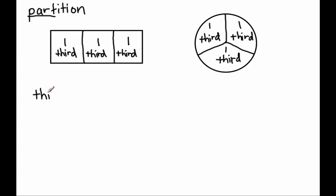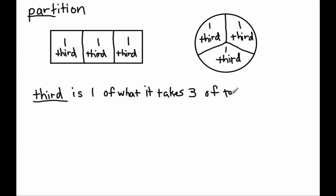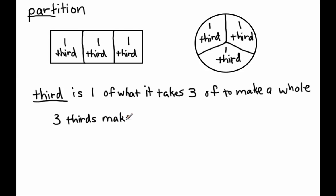We can give a definition for what a third is: a third is one of what it takes three of to make a whole. And if we take a look, how many thirds does it take to make a whole? Let's count — one, two, three. Three thirds. So we have three thirds make one whole. Three thirds are the same as one whole. That's what the equal sign means: is the same as.